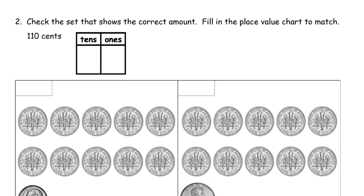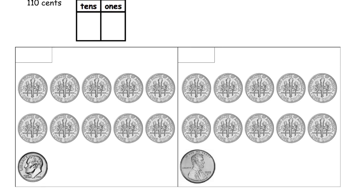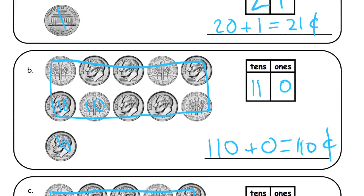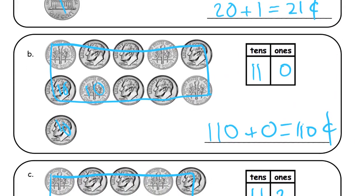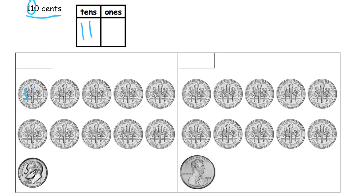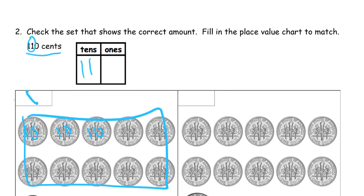And now it's check the set that shows the correct amount. Fill in the place value chart to match. And we're looking for 110 cents. Now you might find it easier to fill in the place value chart before you look at the pictures. So we see the 110 cents, we're talking about 11 10s, just like on the first page when we did part B. That's the 110 cents, right? So that's what we're looking for right there. And which one has 11 10s, which is the same thing as 11 dimes, because dimes are 10s. These are all dimes. You can see there's a 10 group here, one more, that's 11 dimes. So that's the one. Check it. There. And how many ones? Zero ones.